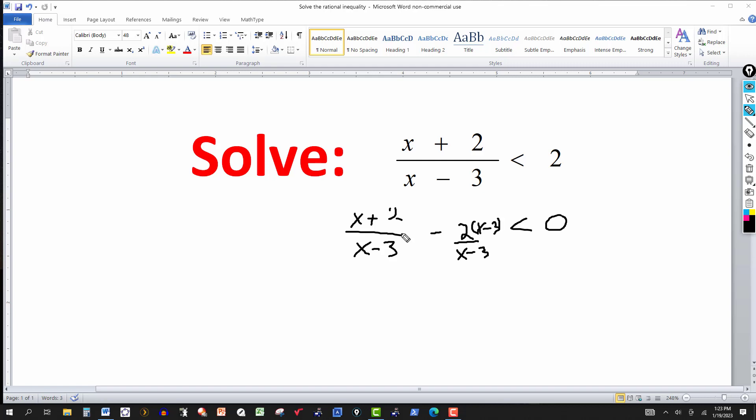So now we have the same denominator. So I'm just going to write this over one denominator, x minus 3. And on top, I can just write the numerator. This will be x plus 2, and then here multiply by the minus 2, so minus 2 times x is minus 2x. Minus 2 times minus 3 is plus 6, and that stays less than zero.